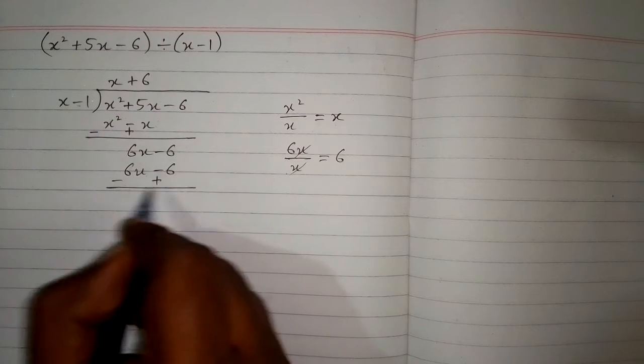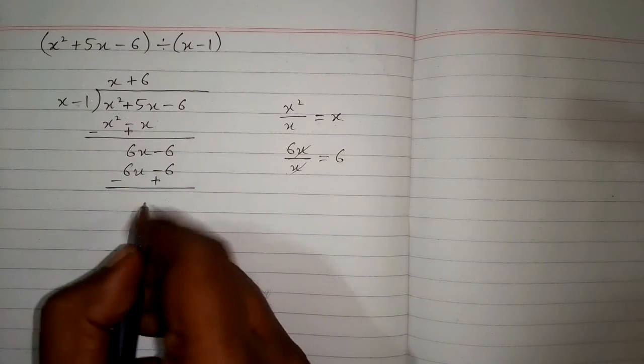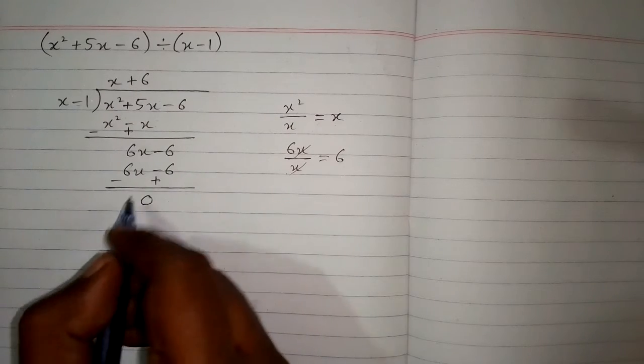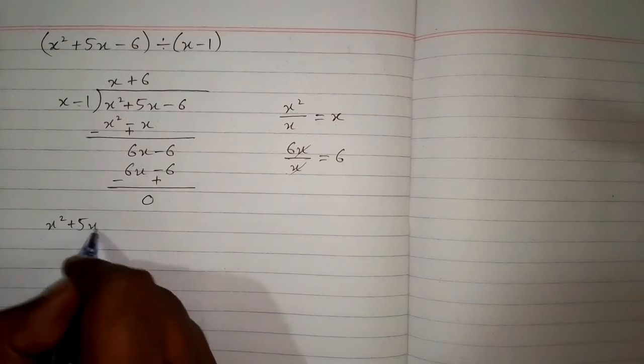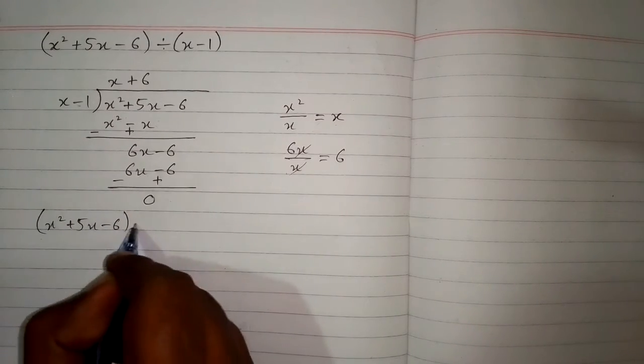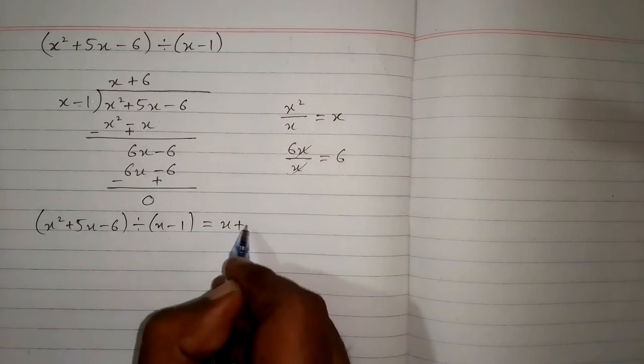So we will change the sign of the second expression. So 6x minus 6x is 0 and minus 6 plus 6 is 0. So the remainder is 0. So x squared plus 5x minus 6 divided by x minus 1 is equal to x plus 6.